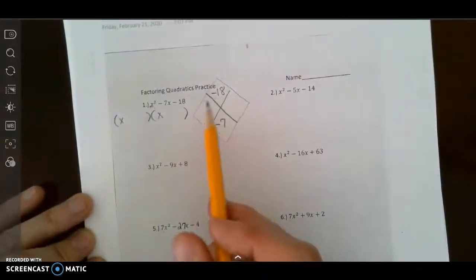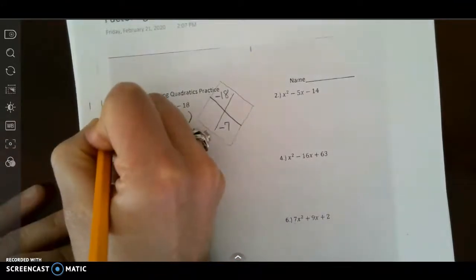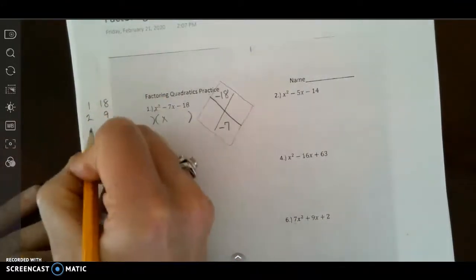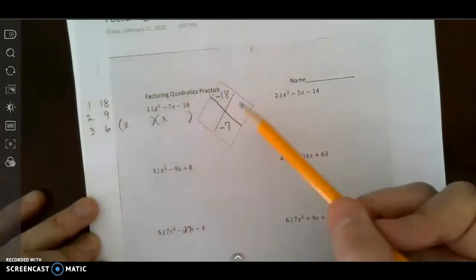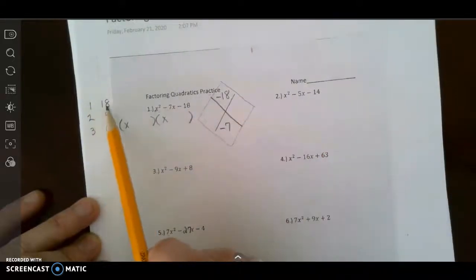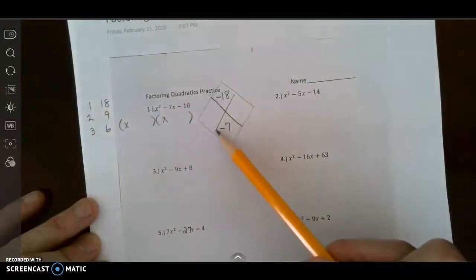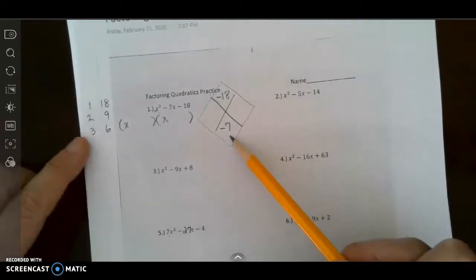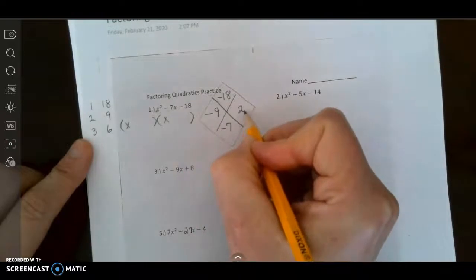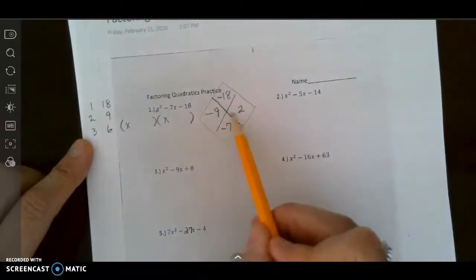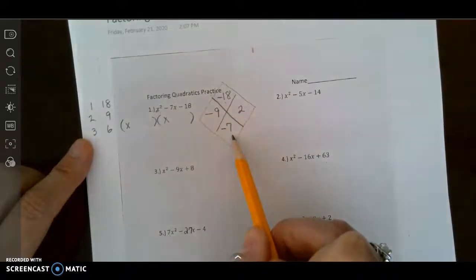So I start listing my factors of 18. I know I have 1 and 18, 2 and 9, 3 and 6, and then I have to ask myself is there any way from these I could get a sum of negative 7. Well I think to myself, I could have negative 9 and positive 2, and when you multiply them you get a product of negative 18 and you get a sum of negative 7.